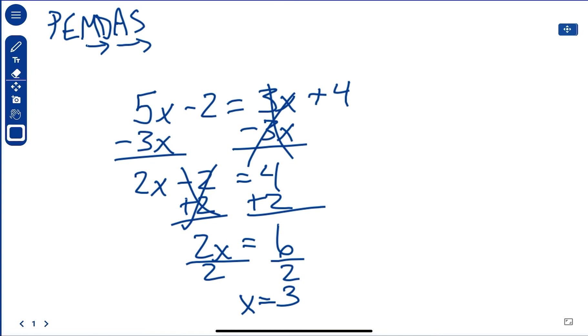And so let's plug it in. 5 times 3 minus 2 is equal to 3 times 3 plus 4. Well, that's 15 minus 2 equals 9 plus 4. And that's, what's that, 13 equals 13. So that checks out.